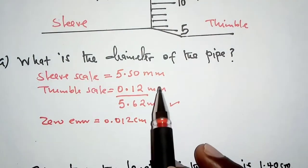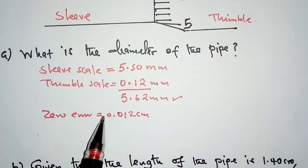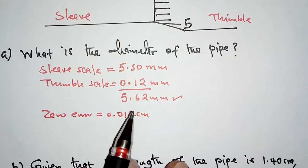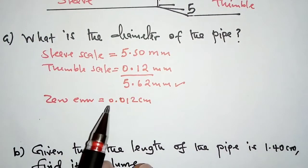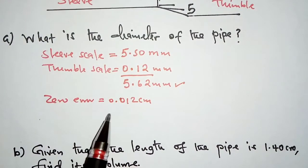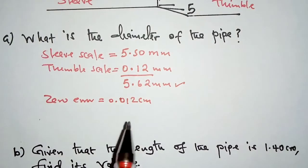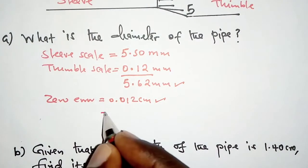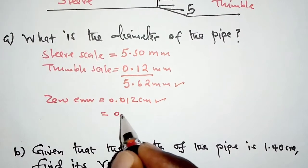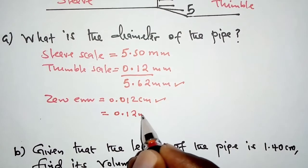Remember our readings are in millimeters, so we have to convert this to millimeters. 10 millimeters is equivalent to 1 centimeter, so 0.012 centimeters equals 0.12 millimeters.